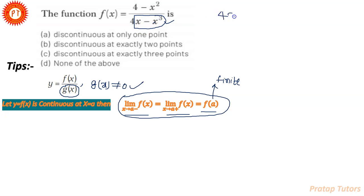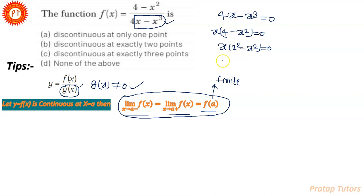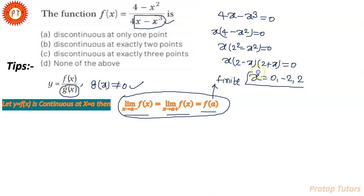तो हमारा equation बन जाएगा: 4x minus x cubed = 0। यहाँ से x common लेने पर: x(4 minus x squared) = 0। और a squared minus b squared वाले formula का use करने पर: x(2 minus x)(2 plus x) = 0। यहाँ से हमारे पास आ जाएगा x = 0, x = -2, और x = 2। ये वो तीन points हैं जिन पर हमारा function defined नहीं होगा।